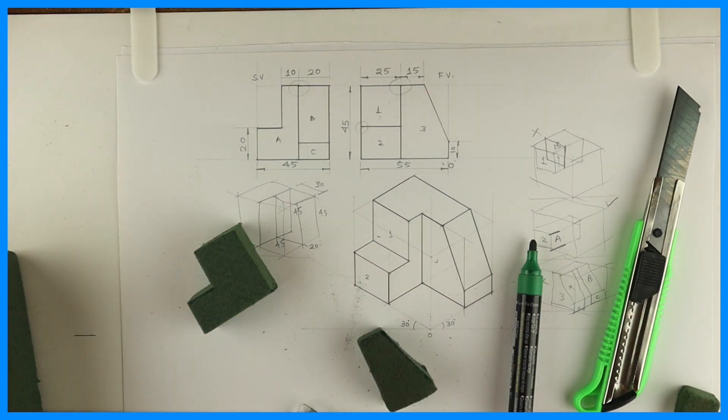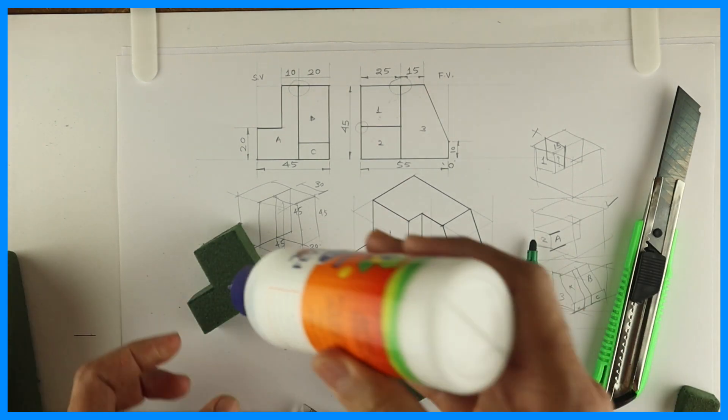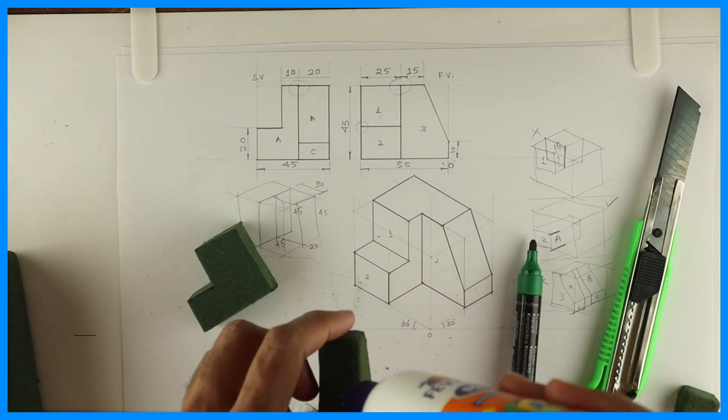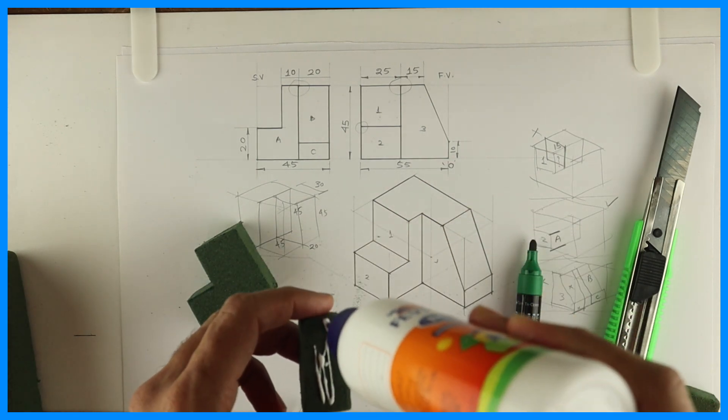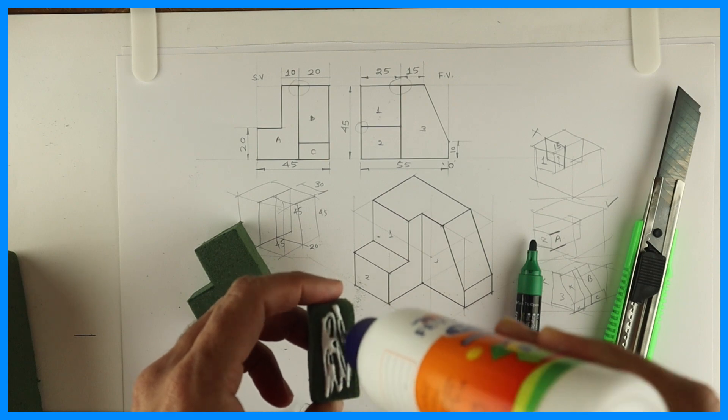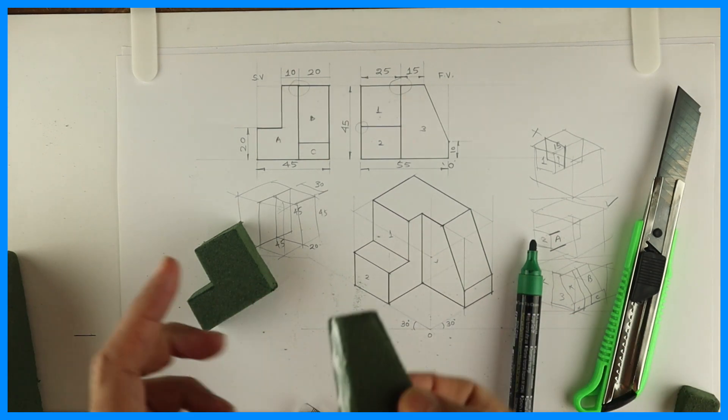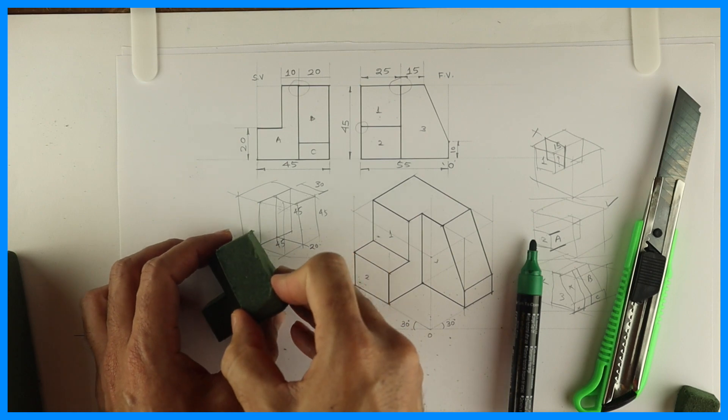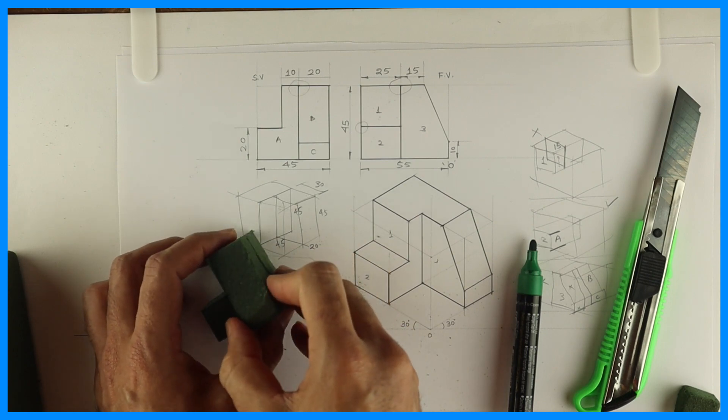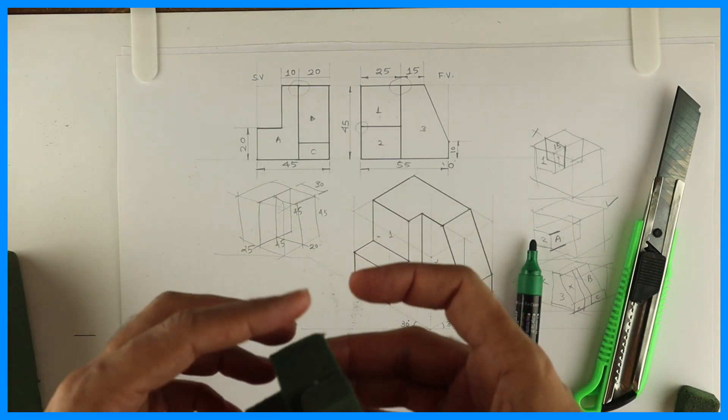You can use sandpaper for the finishing touches. You may realize that it is not accurate or up to the mark, so you can use sandpaper. Now we'll put this Fevicol and we will join this. So we got the required isometric block in floral form.